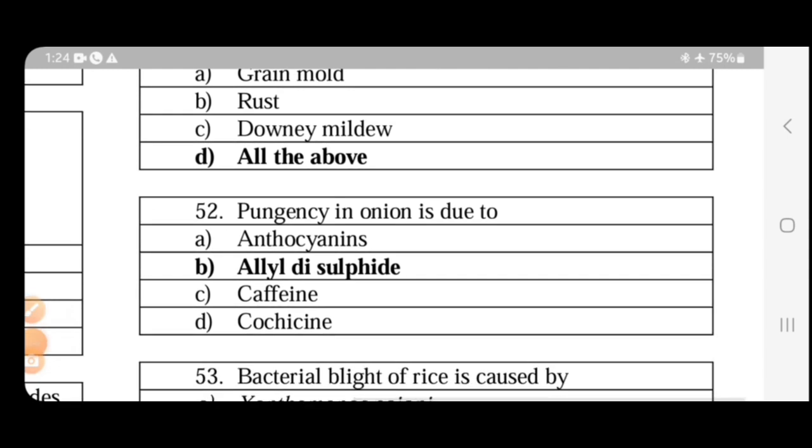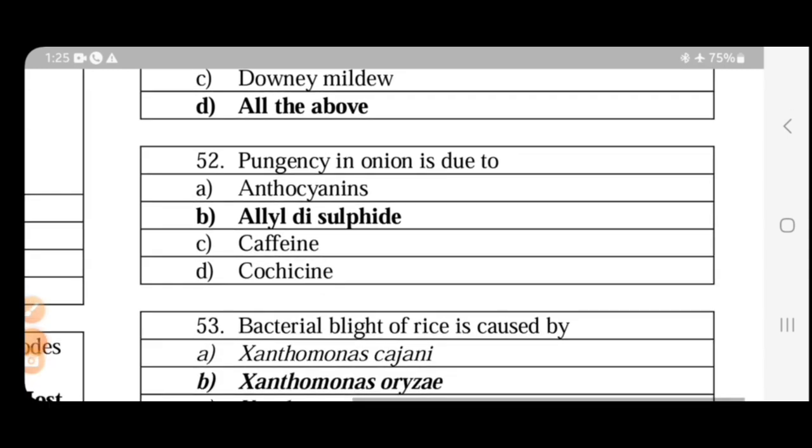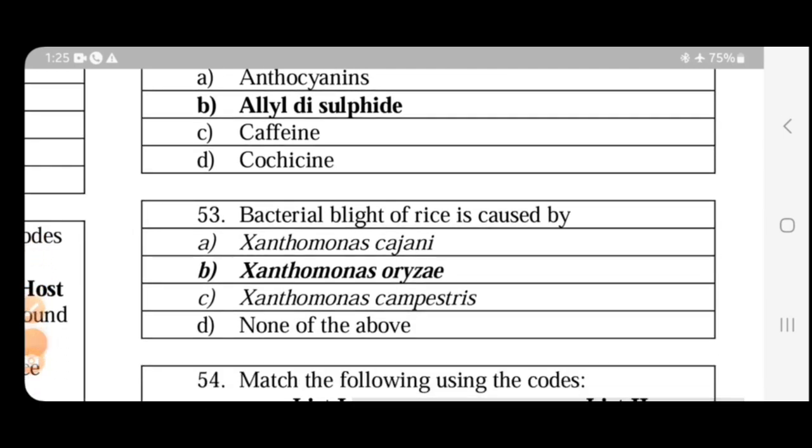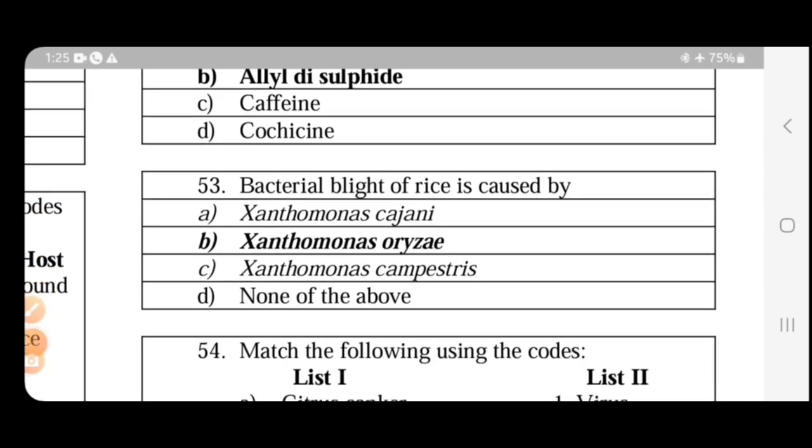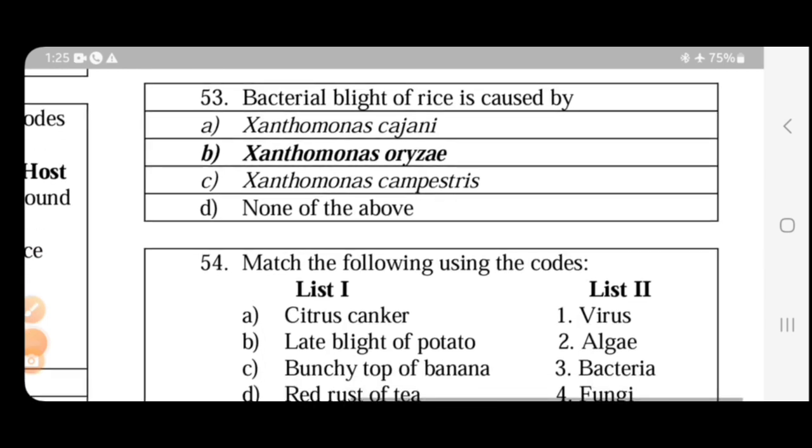Pungency in onion is due to allyl propyl disulfide. Next, BLB of rice is caused by Xanthomonas oryzae pv. oryzae. It is a bacterial disease.